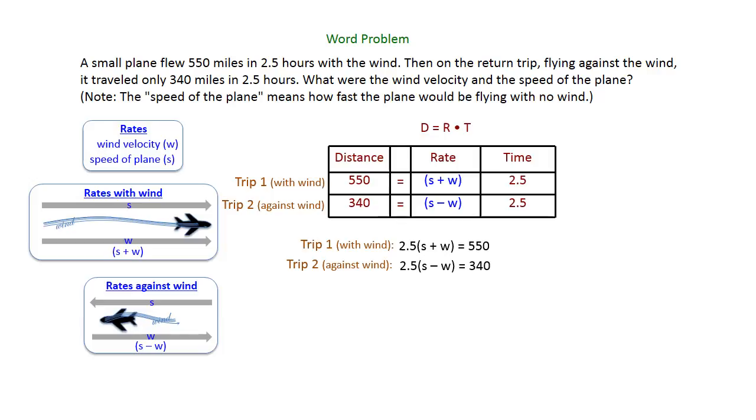So now you have two equations that you can solve. Let's distribute the 2.5. That gives us 2.5S plus 2.5W equals 550 and 2.5S minus 2.5W equals 340. These are nicely set up for addition. Adding those S's together gives us 5S equals 890. Divide by 5, and you get S equals 178. That is the speed of the plane, 178 miles per hour.